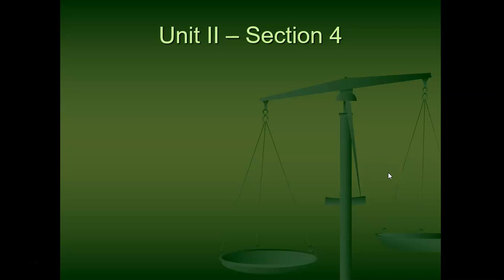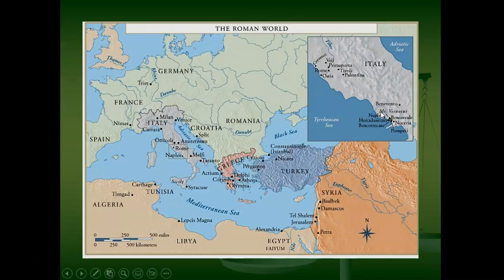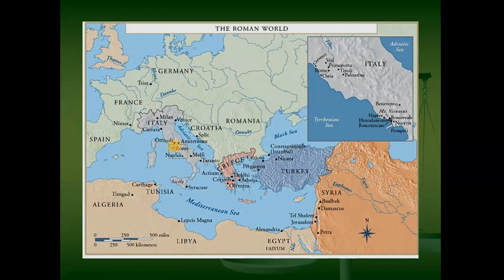The end of classical civilization is the Romans, which would be Unit 2, Section 4 in this particular slideshow. The Roman era starts about 800 BC, ends about 500 AD, or BCE and CE as we now call them.